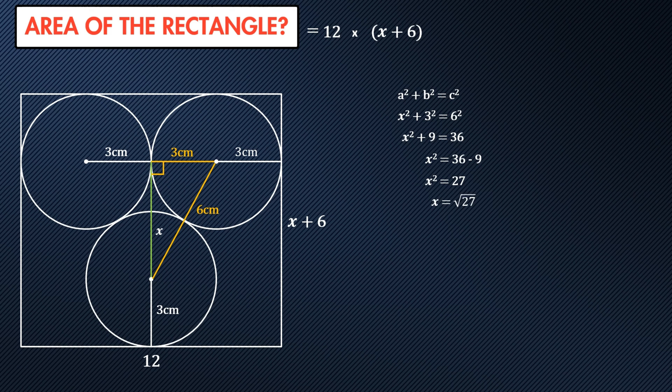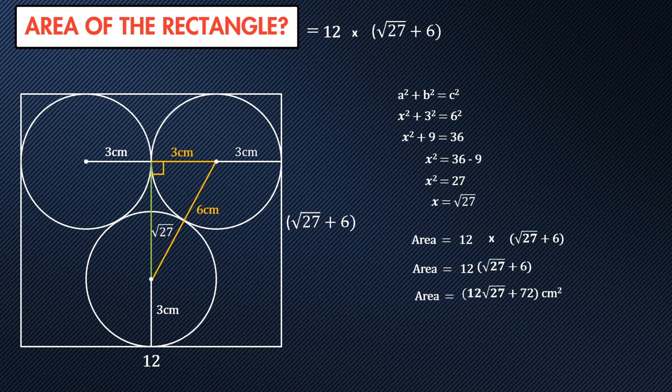Okay, we now have value for x, which means that the width is square root 27 plus 6. So to find the area it is length times width, which is 12 times square root 27 plus 6. We can expand that bracket, and the area is 12 times square root 27 plus 72 centimeters squared.